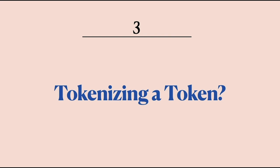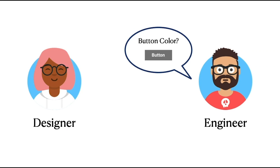These context-agnostic primitive values that define visual styles are called global tokens. Now let's look at what's not global — tokenizing a token. What does that mean?